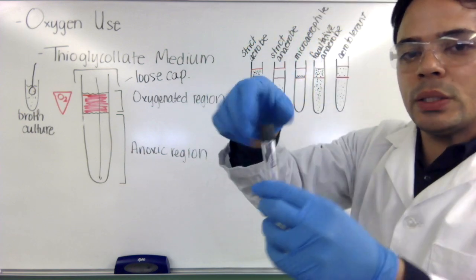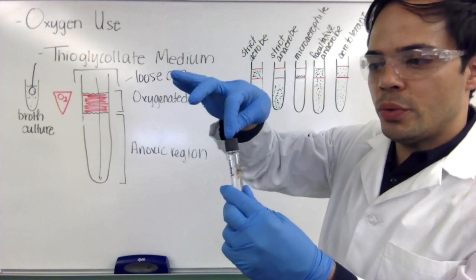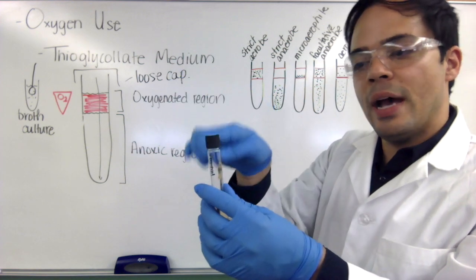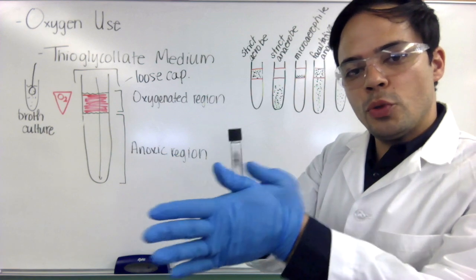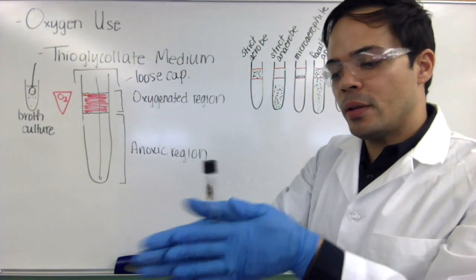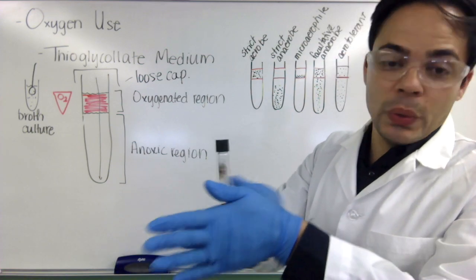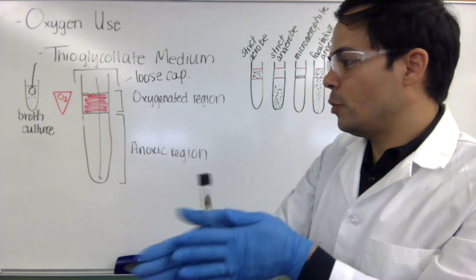So once it is inoculated, close it all the way, open it a half turn to ensure that the cap is loose, air can get in and out. And then you want to rub it between your hands a few times. That will prevent our oxygen gradient from being perturbed and also help to mix around the bacteria a little bit.